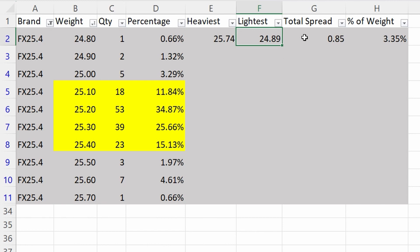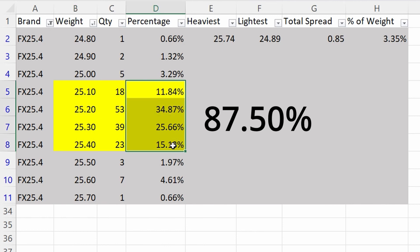I noted the heaviest pellet, the lightest pellet, the difference in weight between those two. So in this case, it's 0.85 of a grain between 25.74 and 24.89. And 0.85 of a grain is 3.35% of the total weight of the pellet. So 3.35% is the total variability in weight. I thought it would be interesting if we figured up what it would take to get us to the 80th percentile. So if we add these quantities of pellets up, the percentage of the total batch ends up to be 87.5%. So it takes four-tenths of a grain range to capture 85.7% in the case of the FX.